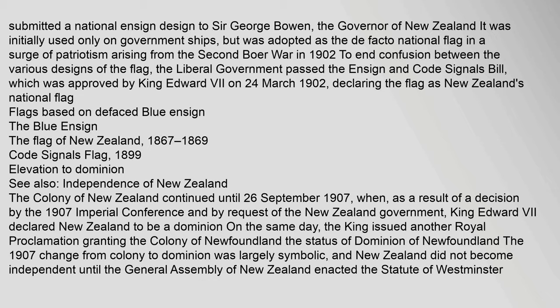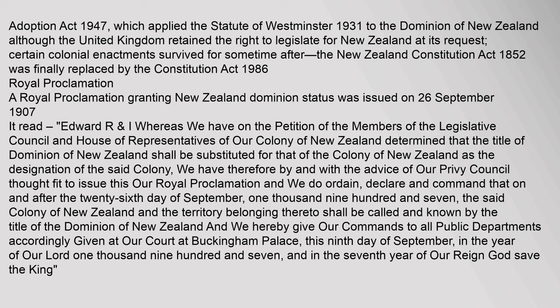The Adoption Act 1947 applied the Statute of Westminster 1931 to the Dominion of New Zealand. Although the United Kingdom retained the right to legislate for New Zealand at its request, certain colonial enactments survived for some time after. The New Zealand Constitution Act 1852 was finally replaced by the Constitution Act 1986. A Royal Proclamation granting New Zealand Dominion status was issued on 26 September 1907.